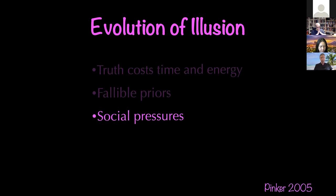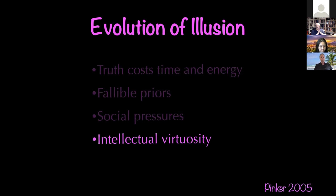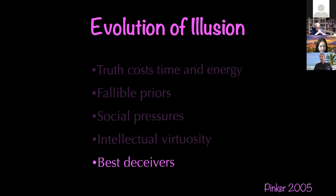What allowed us to survive in the Pleistocene may not lead us to truth today. There are social pressures — often our beliefs are tailored to make us fit in with the group, not to track the truth. There is intellectual virtuosity: many reasons to show how smart we are and have exotic beliefs. Pinker points out that might explain a lot of academia. And Robert Trivers has argued there are selection pressures to deceive others — the best deceiver is often one who has self-deceived and doesn't even know they're deceiving. So the idea that evolution could program us with illusions is spot on.